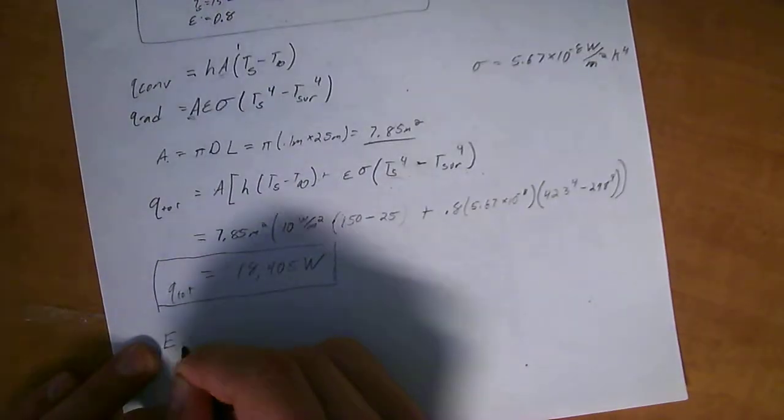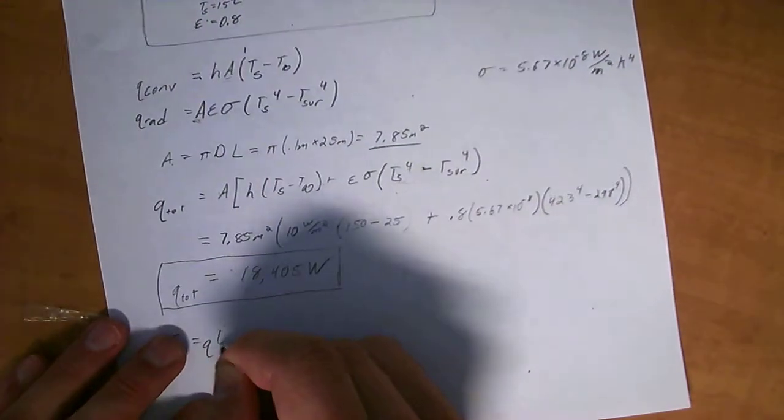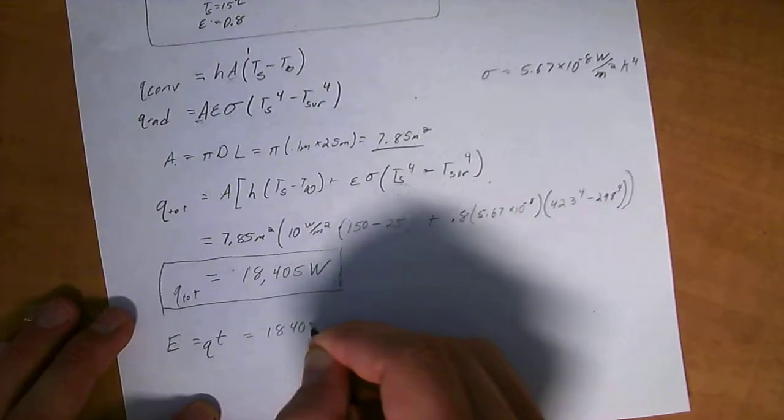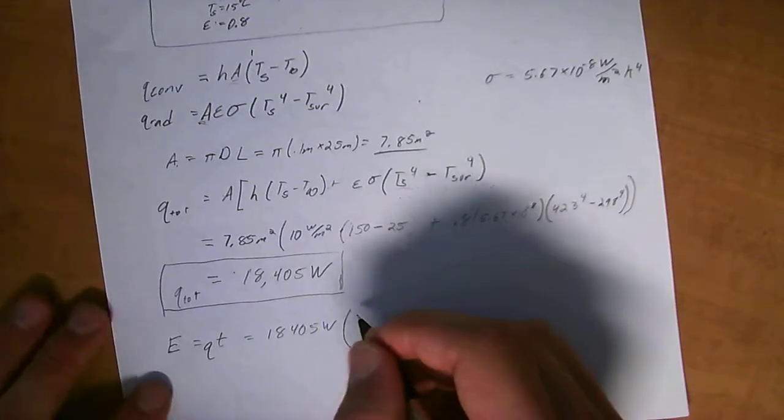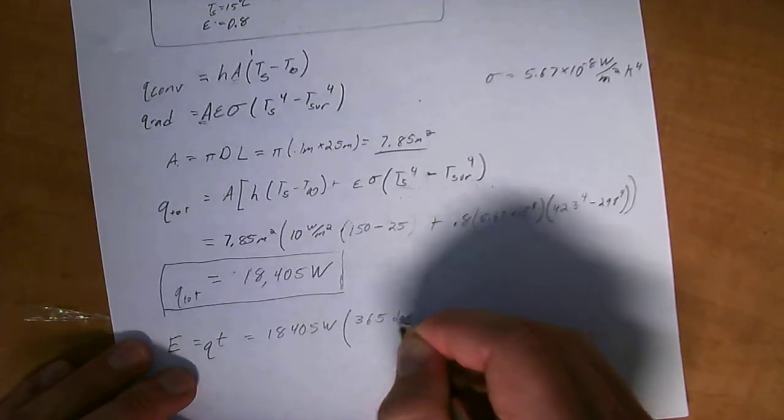Now, the problem asks you for annual energy loss. So total energy is equal to the rate of heat transfer, the power, over a period of time. So we just take 18,405 watts, and then multiply it by time. We know that for an entire year.